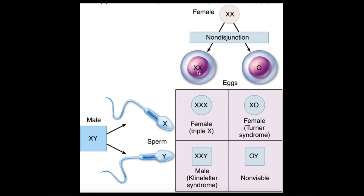If we cross this secondary oocyte with two X's with a sperm cell carrying a Y, we get XXY. Even though there are two X's in this genotype, this person would be male because they have a Y chromosome. Pretty much, if you have a Y chromosome, you're male — you could have XXXXXY and still be male. This condition with the XXY genotype is called Klinefelter syndrome, and both Klinefelter syndrome and XXX syndrome only result from a secondary oocyte that has two X chromosomes.